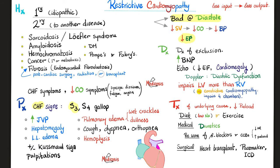Causes of restrictive cardiomyopathy: idiopathic or secondary — sarcoid, amyloid, hemochromatosis, cancer, and fibrosis. For more detail, add lupus, scleroderma, and diabetes. For the most comprehensive list, add Pompe's and Fabry's disease.